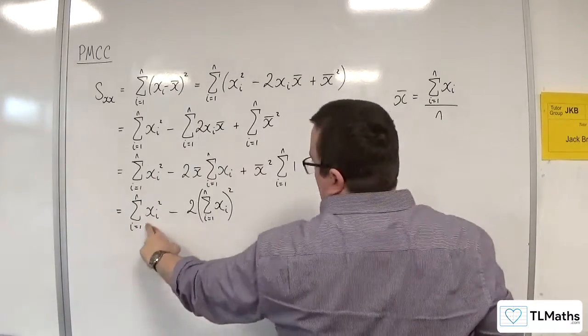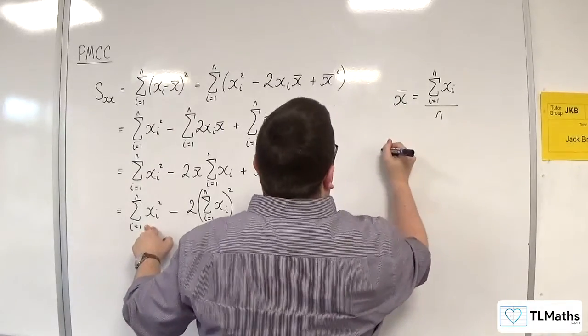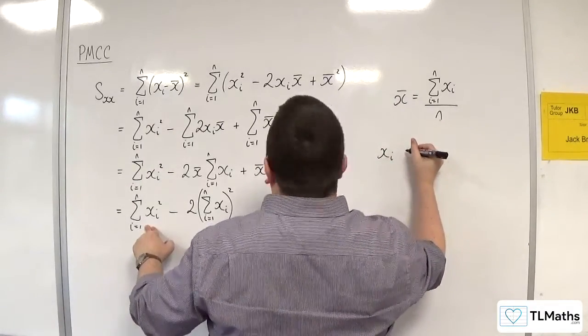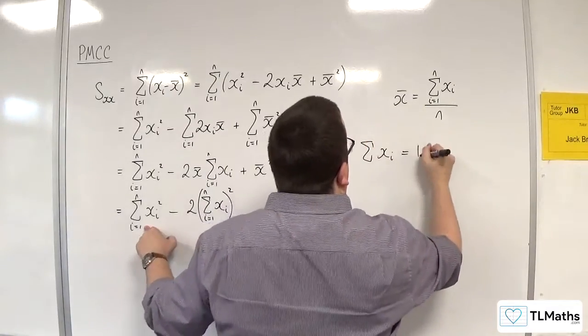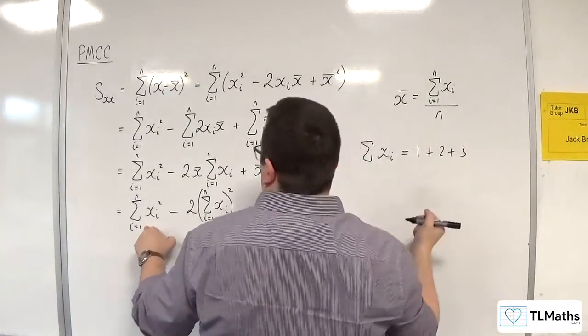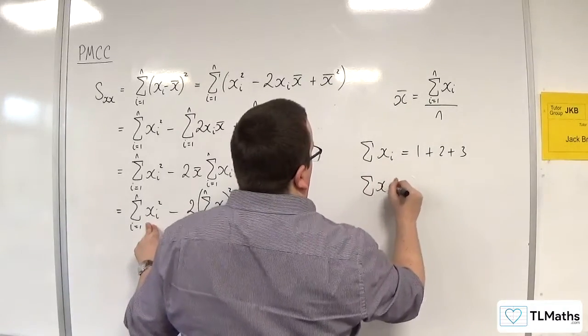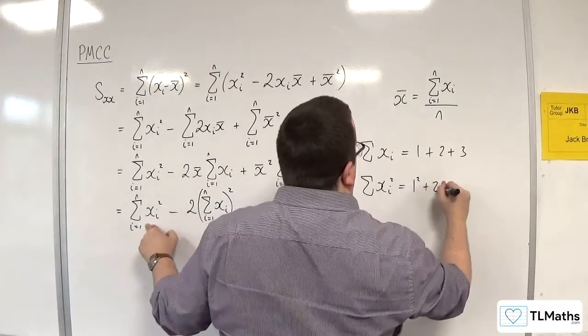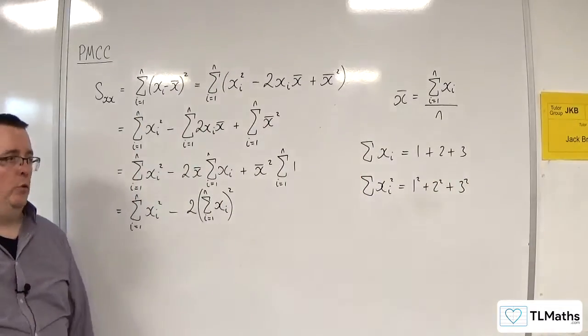So just to identify that, let's say the XI's - let's say the sum of the XI's is 1 plus 2 plus 3, for example. Then what that represents is 1 squared plus 2 squared plus 3 squared, squaring each of the XI's and adding them all together.